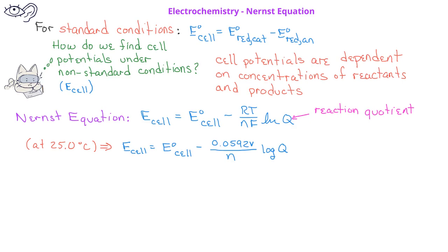When there are more reactants relative to products, such as before the reaction has taken place, we find that the reaction quotient Q is less than 1, and in these situations the cell potential is greater than the standard cell potential. This is the situation when a battery is fully charged.